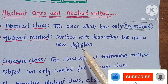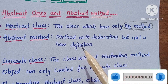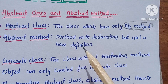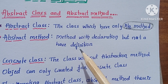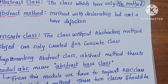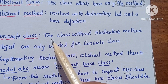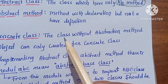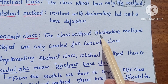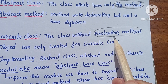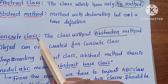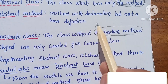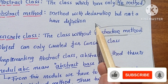So, this is the abstract method — the method with a declaration but not a definition. Without this abstract method, it will be the concrete class. The abstract method will have a declaration but not have a definition.